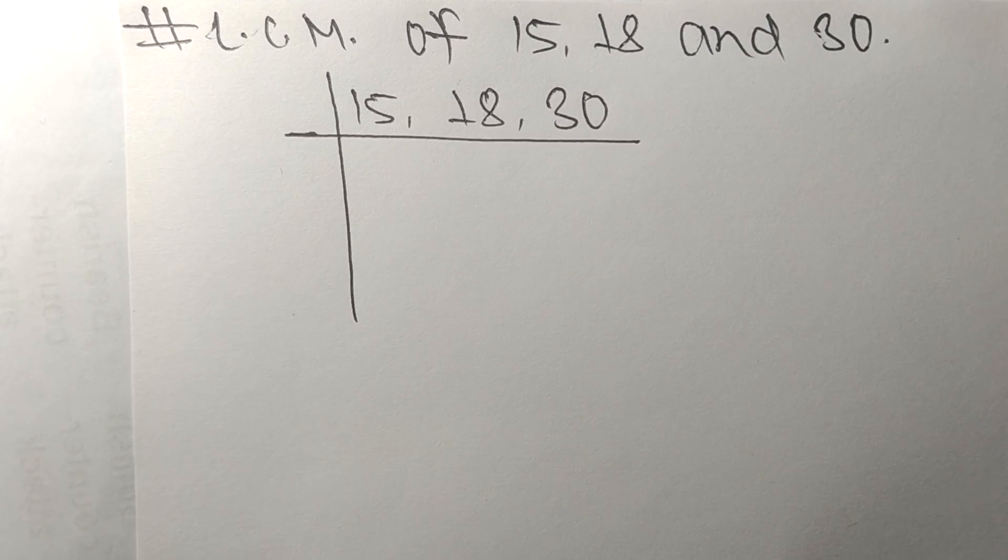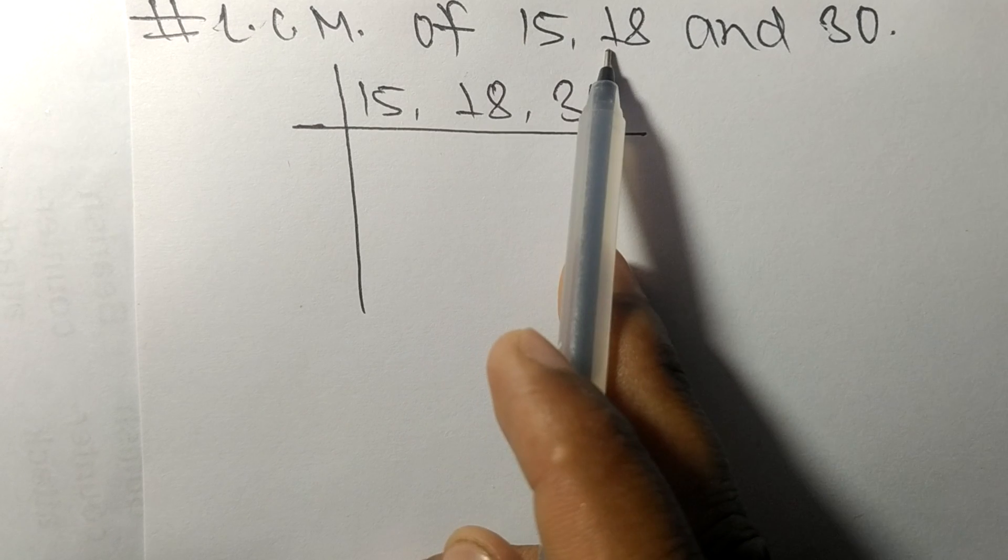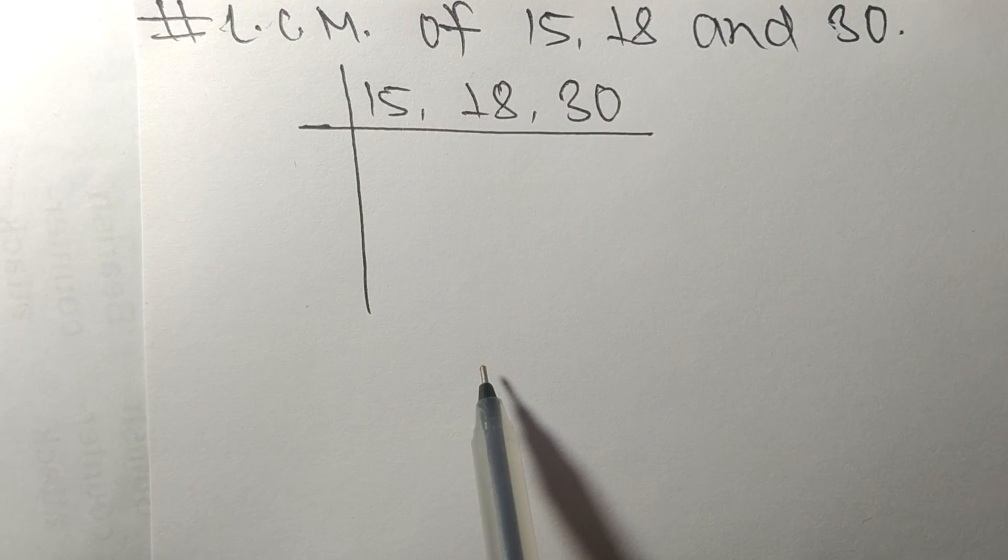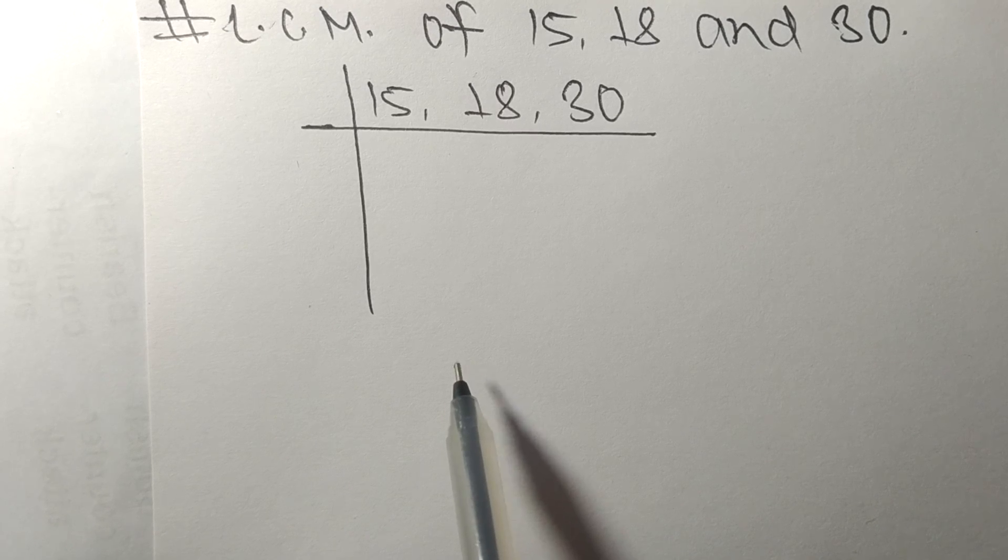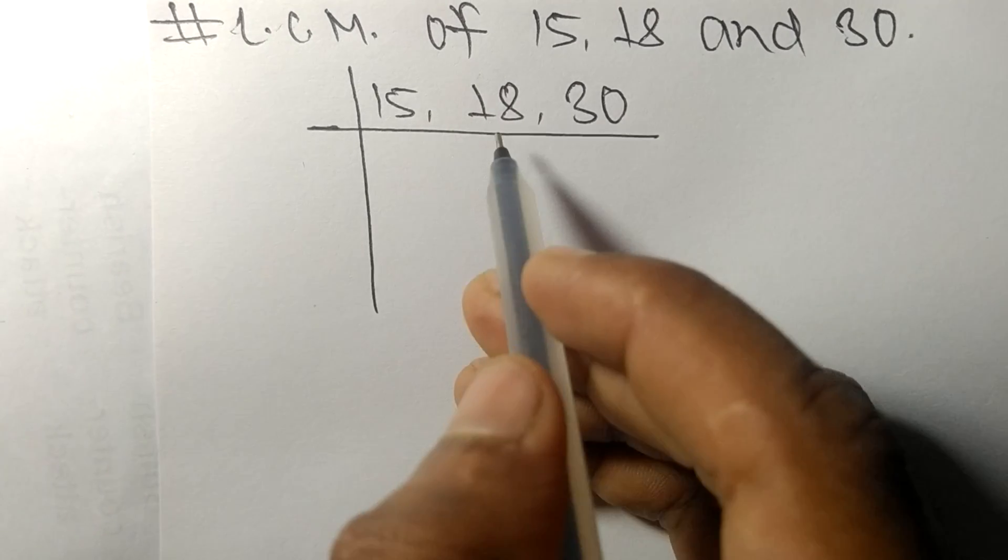Today in this video we shall learn to find the LCM of 15, 18, and 30. To find LCM, we have to choose the lowest number that can exactly divide at least any two of these numbers.